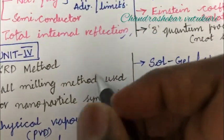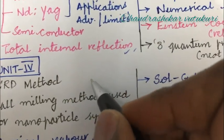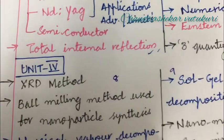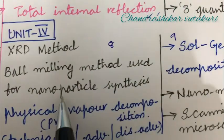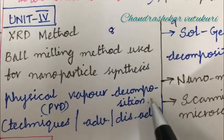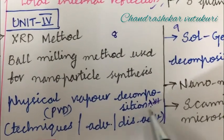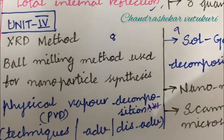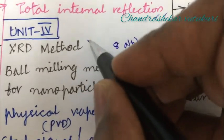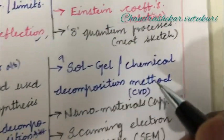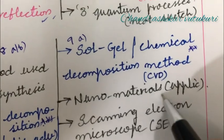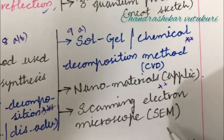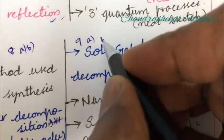The next question I am going to highlight is question number 8 and 9. This is all about Unit 4: XRD method, ball milling method used for nanoparticle synthesis, and physical vapor deposition, which is the topmost question along with techniques, advantages, and disadvantages. This may be 8AB and may be a short question. Sol-gel and chemical deposition method are topmost questions which may occur in 9A. Nanomaterial and applications may be short questions. Scanning electron microscope is also very important and may occur in 9B.